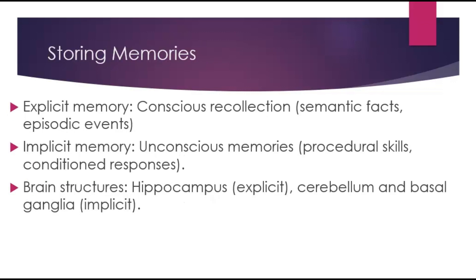When it comes to storing memories, explicit memory covers facts and experiences you can consciously recall and explain — such as what you did on your last birthday (episodic) or general knowledge like DC being the capital (semantic). Implicit memory covers skills, habits, and conditioned responses that are unconscious — procedural skills. We thank the hippocampus for explicit memory and the cerebellum and basal ganglia for implicit memory.